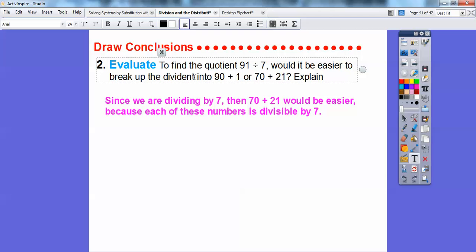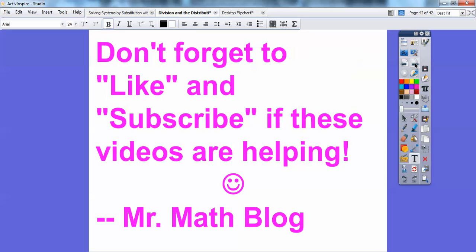So I would pick 70 plus 21, because 7 goes into 70 ten times, and 7 goes into 21 three times, so 10 plus 3 would be 13. The answer to this quotient would be 13. Let me change this thing right here, and then I'll save it in just a minute here. I hope that helps you guys, and I hope you're having a fantastic year. Take care.